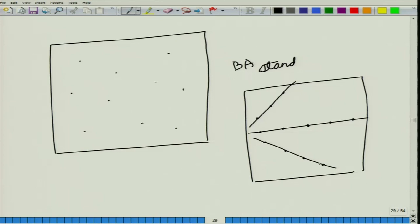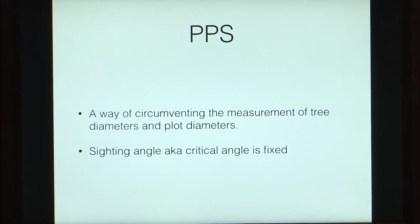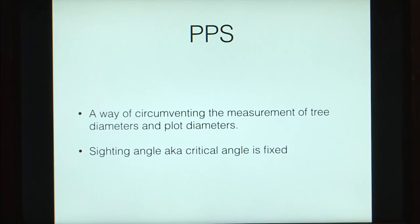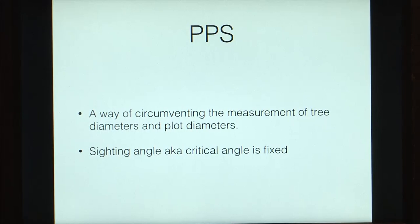In point sampling, you could go for a random sampling point or for a systematic sampling point. Probability proportional to size sampling is a way of circumventing the measurement of tree diameters and plot sizes. We do not calculate the size of the sample plot and we do not measure the sizes of all the trees. There is a fixed sighting angle — also known as the critical angle — and any tree that subtends an angle greater than this critical angle will be counted.